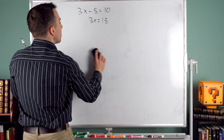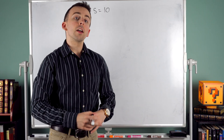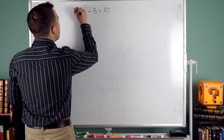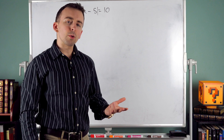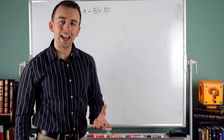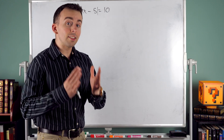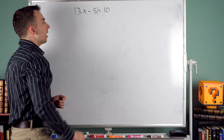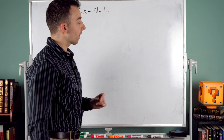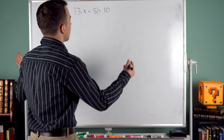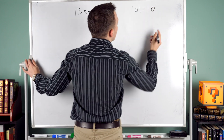But what if we got a little crazy with it? What if instead of solving 3x minus 5 equals 10, we wanted to solve the absolute value of 3x minus 5 equals 10? To make things a little simpler, let's first consider the equation: the absolute value of a equals 10.